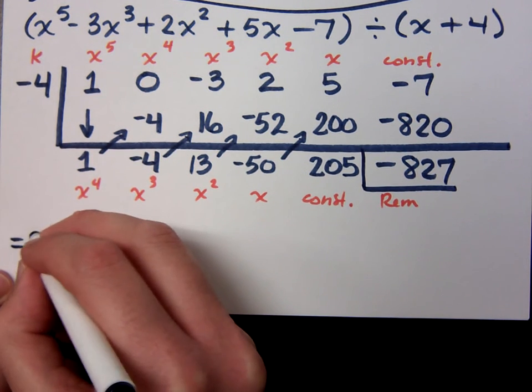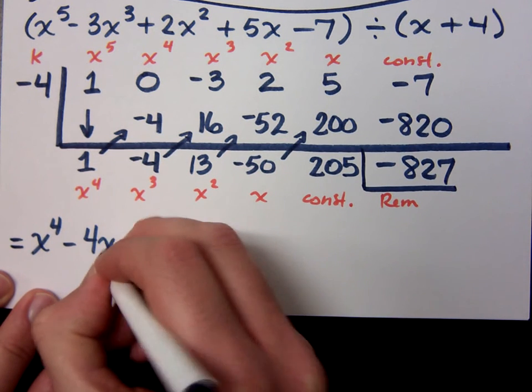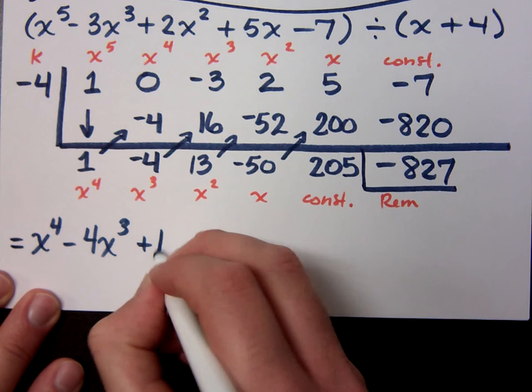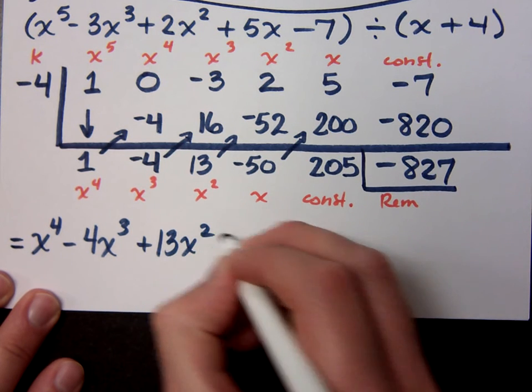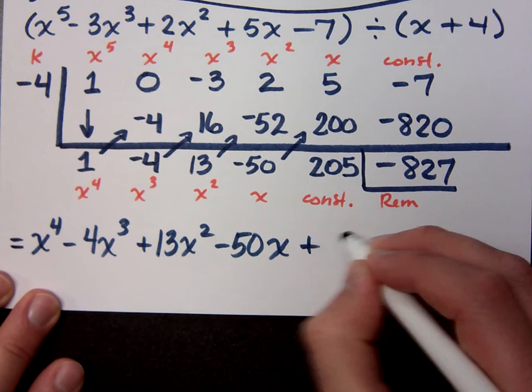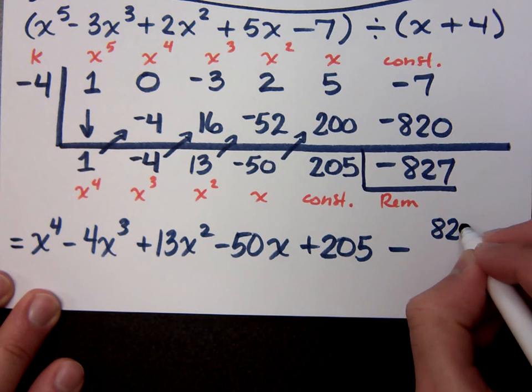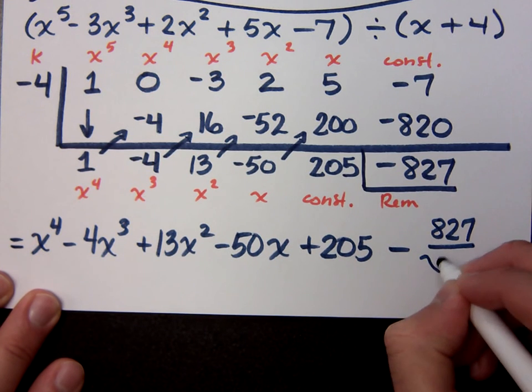x to the 4th. Minus 4x to the 3rd. Minus 4x to the 3rd. 13x squared. 13x squared. Minus 50x. Minus 50x. Plus 205. Plus 205. Minus 827. x plus 4. And then your remainder term.